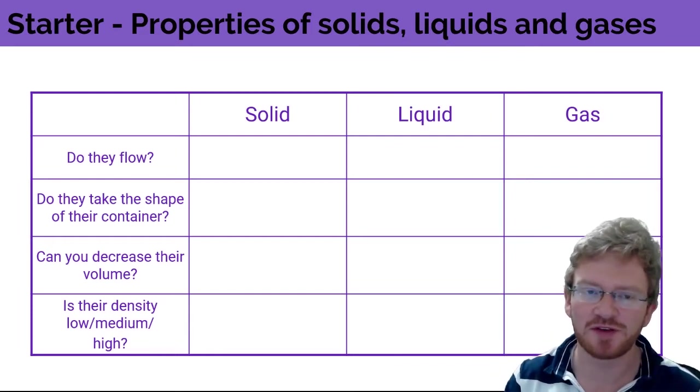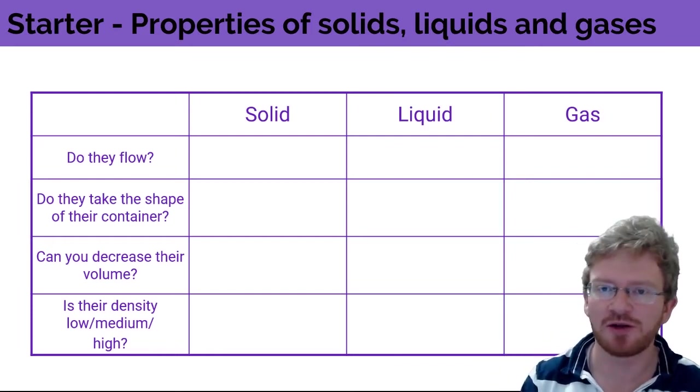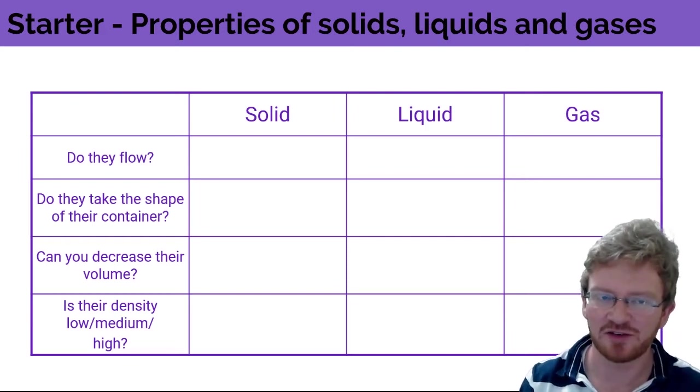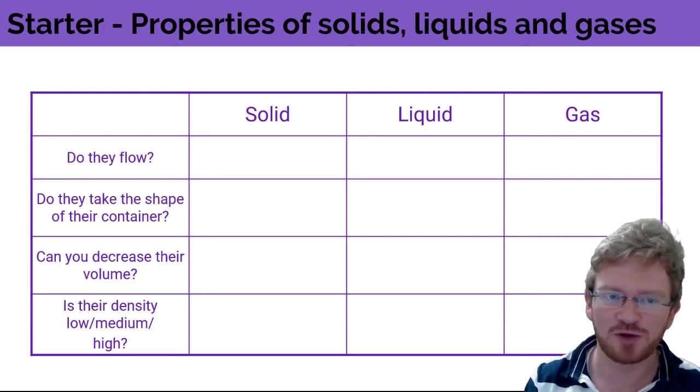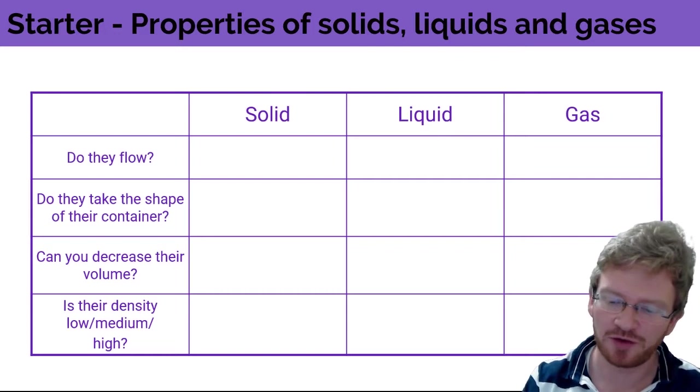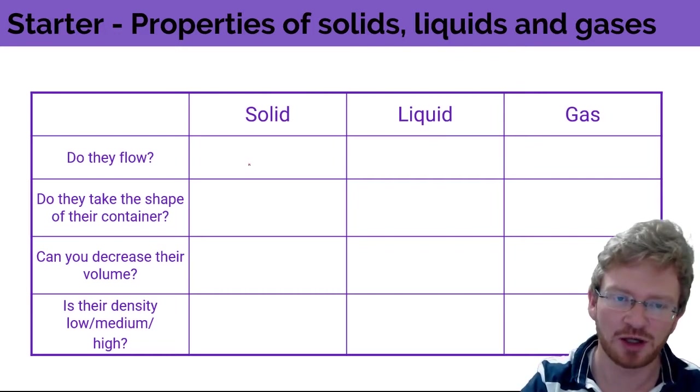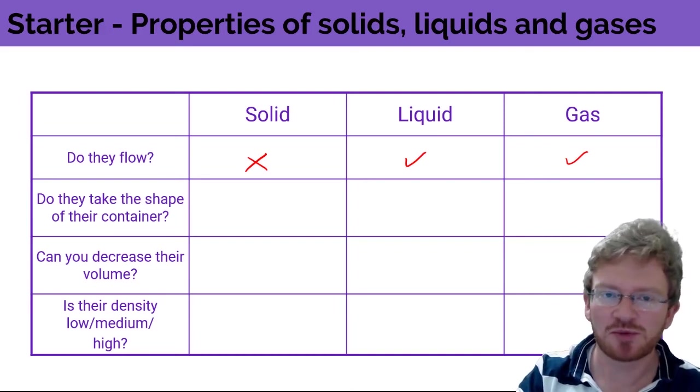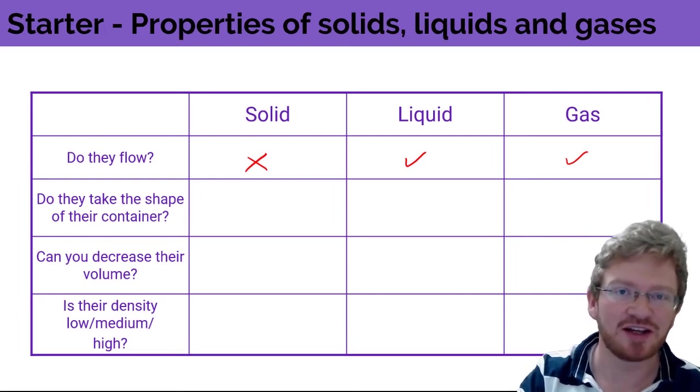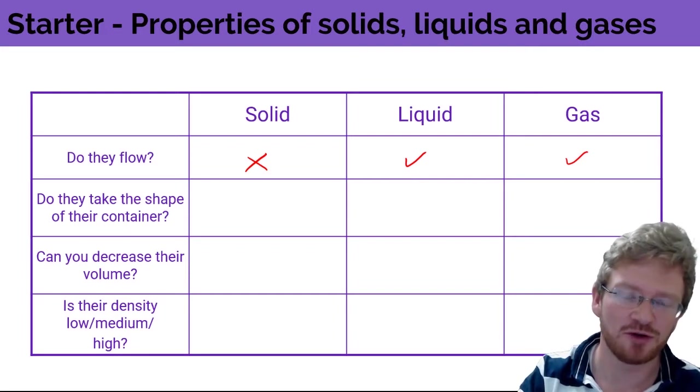Let's just start off with a little recap. I want you to think about the particles of solids, liquids and gases. First of all, do they flow? Flow means can they move from one location to another. Particles cannot flow in solids, they can flow in liquids and they can flow in gases. Now there are some types of solids that act as though they can flow, for instance sand, but at a molecular level it can't flow. An individual sand grain cannot flow.